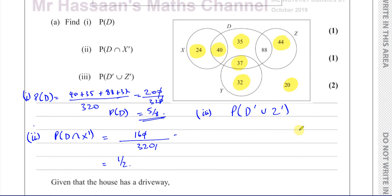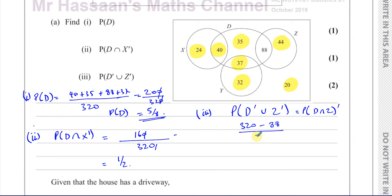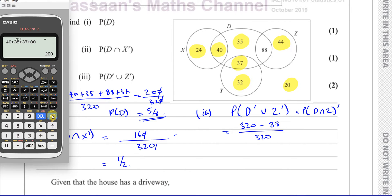So basically it's the whole thing apart from this 88 here, which is the intersection between D and Z. You can think of this as being the probability of D intersection Z complement — everything apart from that. So basically it's the whole of the 320 except for 88. So it's 320 minus 88 divided by 320, and that gives us 29 over 40.